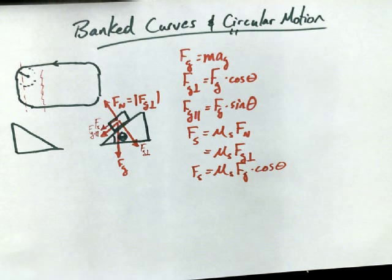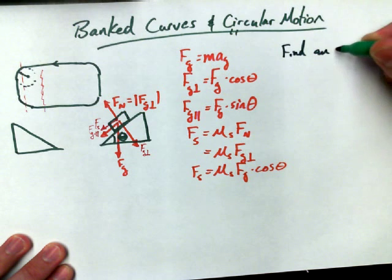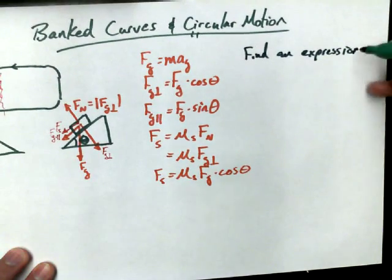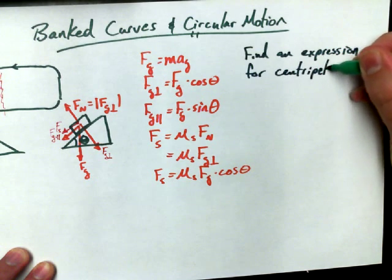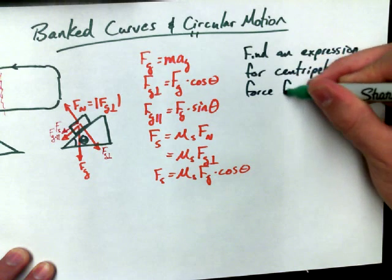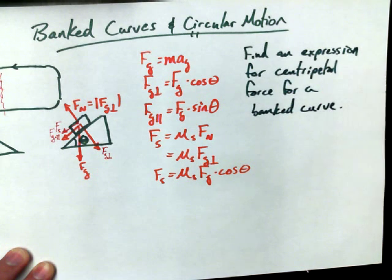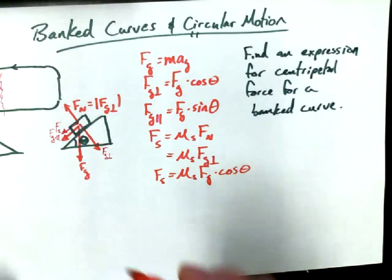Now, I haven't even posed a question. The question I'd like to pose is: find an expression for centripetal force for a banked curve. Now, what we have is forces that are going down this ramp. So let's see if we can focus on finding an expression for the forces that are pulling the car down the ramp, or at least keeping it from sliding up the ramp as it takes the corner.